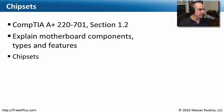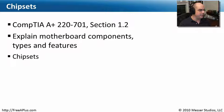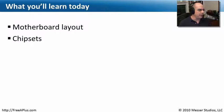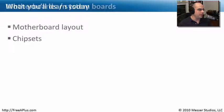This comes from our CompTIA A-Plus 220-701 Essentials Exam, Section 1.2, where we need to explain motherboard components, types, and features. Specifically, we're going to talk about chipsets — we'll learn all about the chipsets on our motherboard, the entire layout, and go into details about what chipsets really mean.